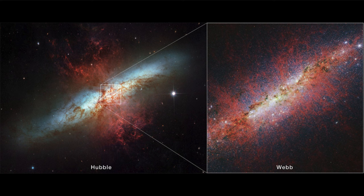On the left we see the wider field view from the Hubble Space Telescope, and the inset image is zooming in with far more detail at the center from the James Webb Space Telescope. Hopefully it tells us more about this galaxy, though getting more detail sometimes raises more questions than it actually solves.